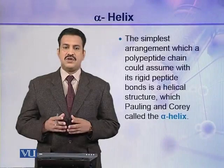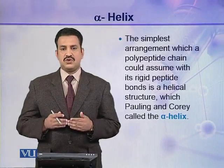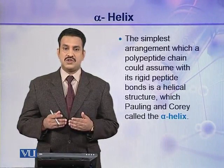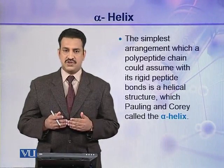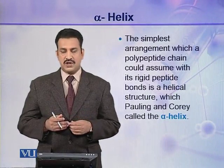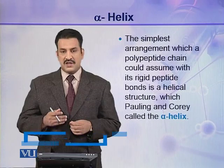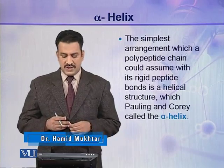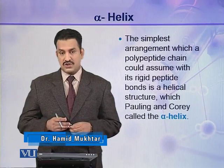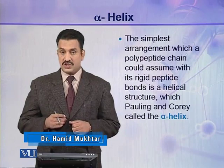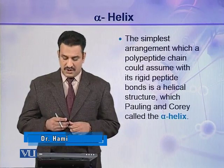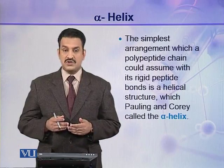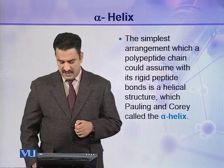After knowing the nature of the peptide bond and the rotations which are allowed in a polypeptide chain, Pauling and Corey concluded that the simplest arrangement which a polypeptide chain could assume with its rigid peptide bond is a helical structure which they called alpha helix.